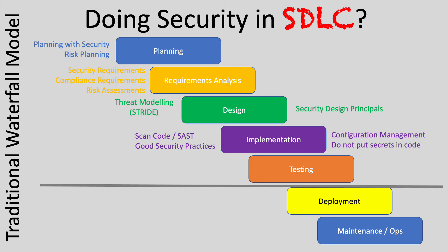As part of the SDLC activities, we have testing. These are traditional testing types: white box testing, black box testing, and gray box testing. We also have dynamic application security testing (DAST) and static application security testing (SAST) — scanning the code. We may do SAST during implementation and again at the end. We might also hire internal pen testers to look at the software from an external attack vector perspective.